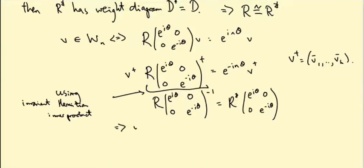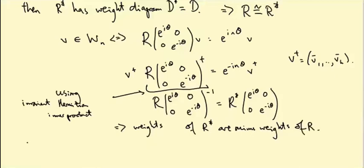So the weight spaces of R dual, well, let's say the weights of R dual are minus the weights of R. And because the weights of R have this symmetry about the origin, supposed to be a symmetry, they already occur in pairs with opposite sign. So this tells us R is isomorphic to R dual.